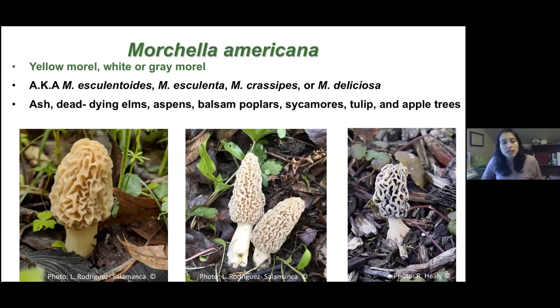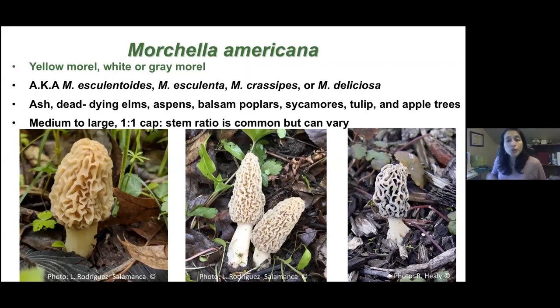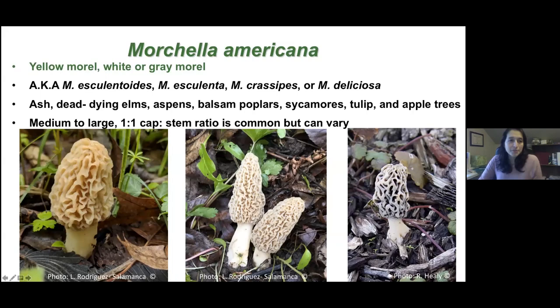Morchella americana is normally associated with forest areas that have ash trees, dead or dying elm trees, aspens, balsam poplars, sycamores, tulips, and apple trees. The cap-to-stem ratio is generally one to one, though some have a longer stalk. Color can range from more yellow on one end to lighter or even gray — hence the common nicknames yellow morel, white morel, or gray morel.